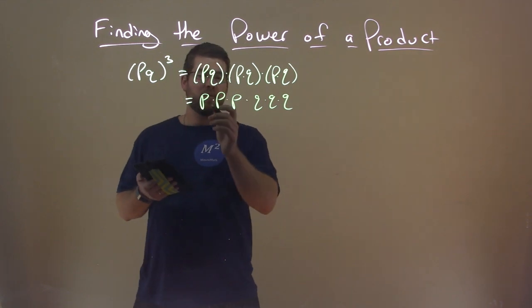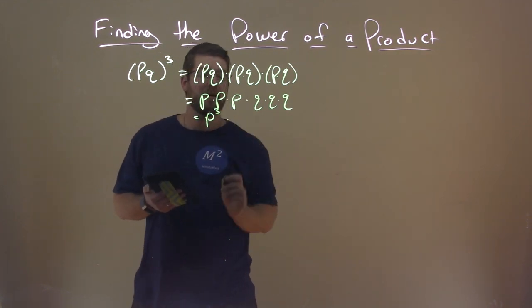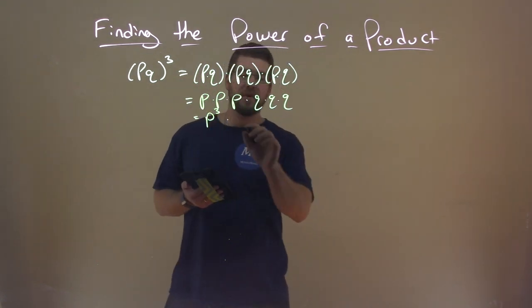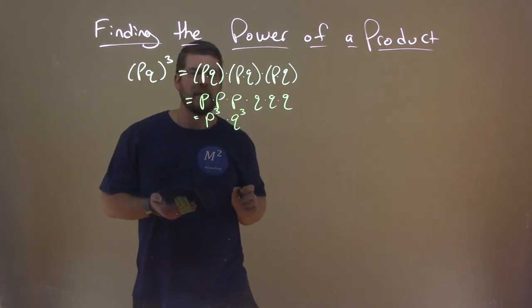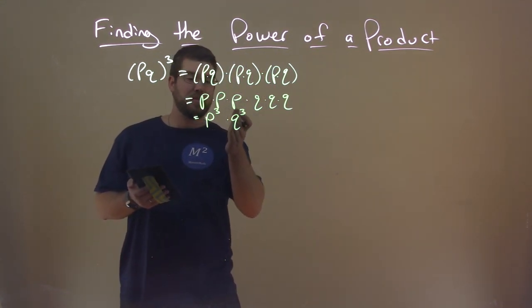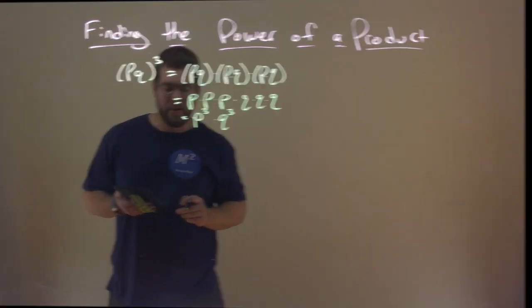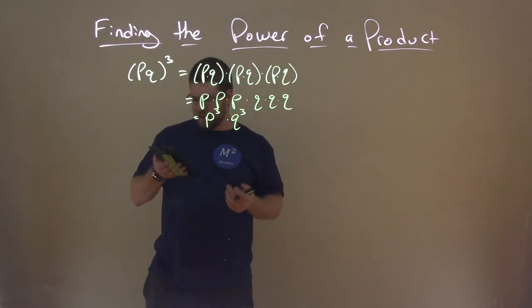From there, three P's being multiplied is really just P to the third power, and the same thing with the three Q's. That's Q to the third power. And hopefully now we can see some connection between here, P to the third times Q to the third, and this P, Q, all to the third power. So let's get to our rule here.